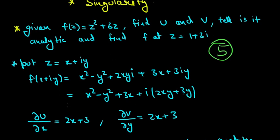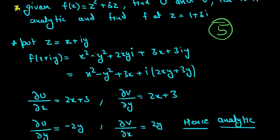Putting x plus iy in this given equation, we get x squared minus y squared because i squared is minus 1, plus 2xiy plus 3x plus 3iy.